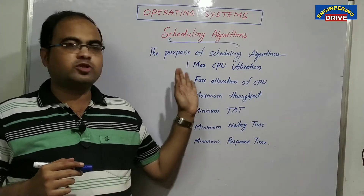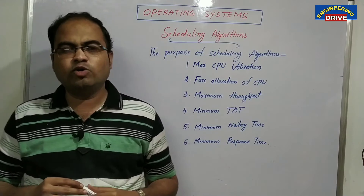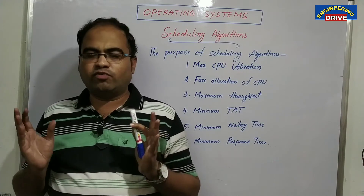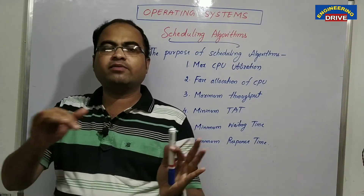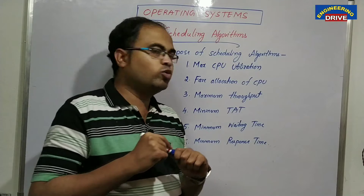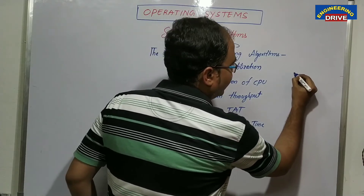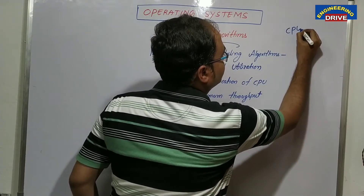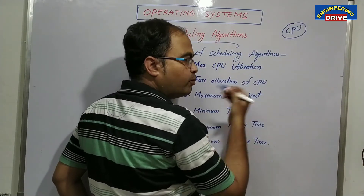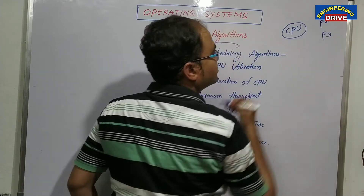What is the main purpose of a scheduling algorithm? Why does our operating system use scheduling? Scheduling is nothing but a timetable — if you follow anything according to a timetable, the work will be completed in a proper manner. Similarly, our operating system does the same. You need to understand three things in order to understand scheduling algorithms: there is a CPU which executes all our programs or processes, and there are processes P1, P2, and P3.